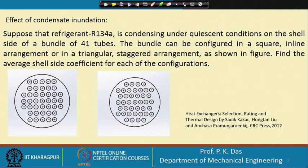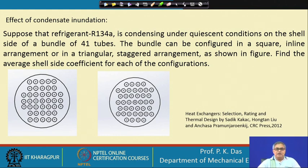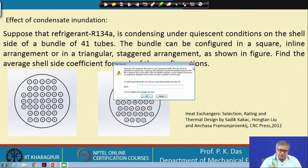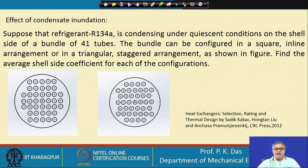Here all the tubes will take part in condensation, but the condensate from the tube above will fall on the tube below, which will thicken the condensate film of the tube below and diminish the rate of heat transfer. This diminishing effect is a progressive one — as we go to tubes lower and lower, there will be a more detrimental effect of film flooding. This we have to take into consideration, and the average heat transfer coefficient must be estimated accounting for all the heat transfer coefficients on the different tubes.